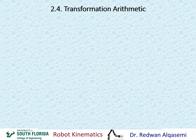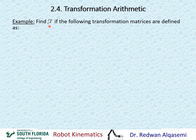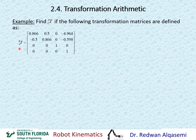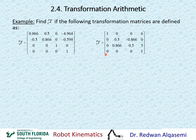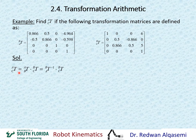Now let's take an example on this inversion. Find T of C relative to A, given the following transformation matrices: T of A relative to B, and T of C relative to B. We need to find T of C relative to A. To start the solution, T of C relative to A equals T of B relative to A times T of C relative to B. If you think about it as a fraction, B would cancel with B, leaving A on top and C on the bottom — that's just a way to think about it.